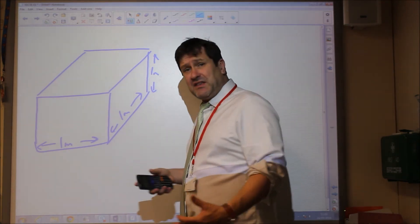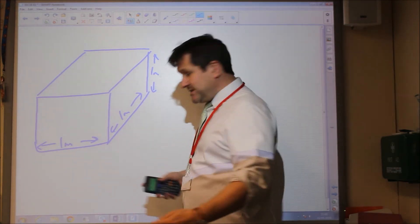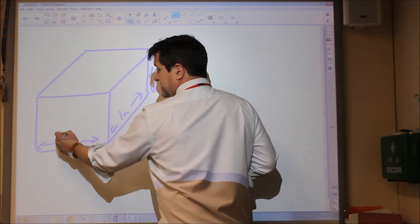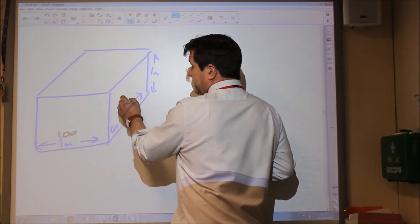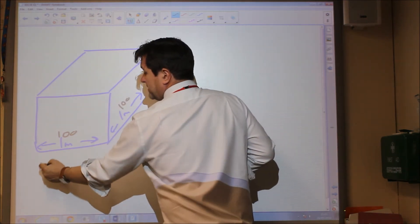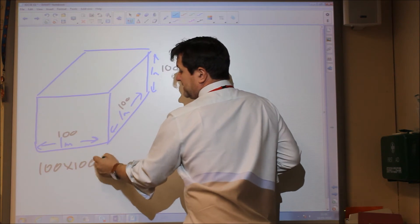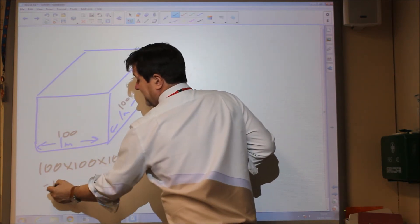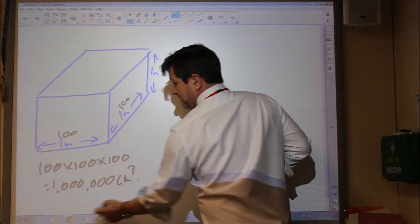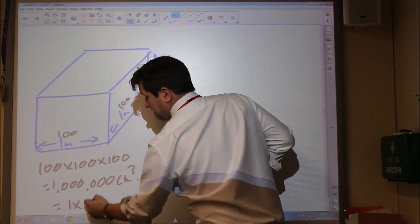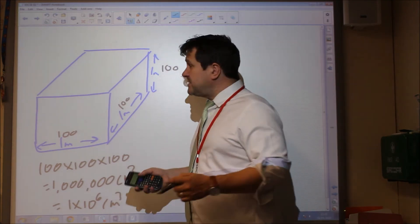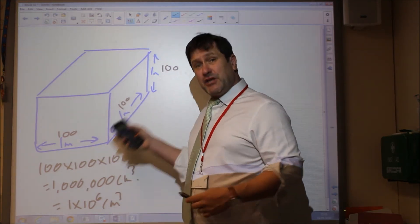In actual fact, it's 100 centimetres by 100 centimetres by 100 centimetres. So 100 times 100 times 100 is a million. So there are a million centimetres cubed in one metre cubed.